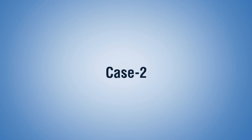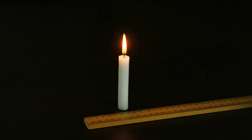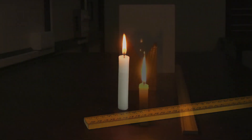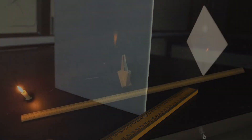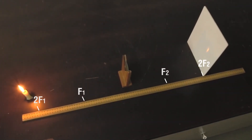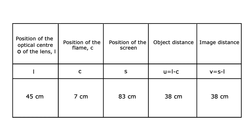Case 2 — Object at 2F1: Place the candle at 2F1 and adjust the position of the screen to obtain a sharp image. Notice that the image will be formed at 2F2. The image formed is real, inverted, and of the same size as the object. Record the observations in the table.